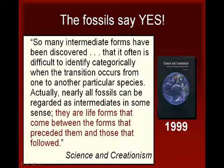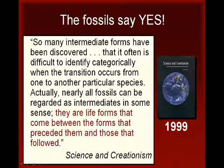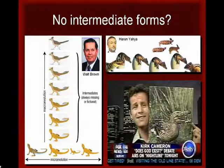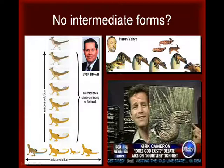So many intermediate forms have been discovered that it is often difficult to identify categorically when the transition occurs from one to another particular species. Actually, nearly all fossils can be regarded as intermediates in some sense — they are life forms that come between the forms that preceded them and those that followed. So, what are we to make of the claim that there are no intermediate forms in the fossil record? As it turns out, those who make the claim are usually harboring fundamental misconceptions about how evolution works.